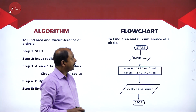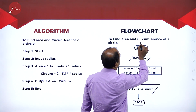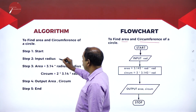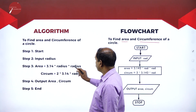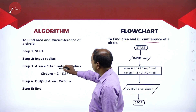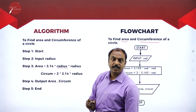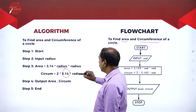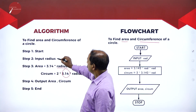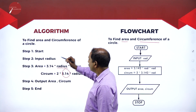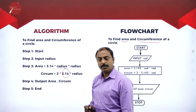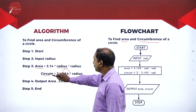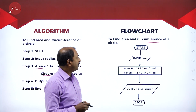Now let us move on to the next example: a flowchart to find the area and circumference of a circle. The algorithm starts with input radius. We know the formulas — area = π r² and circumference = 2πr. We enter the value of radius, with π as the constant 3.14. Then we input the radius, apply the formulas (processing), and print the output: the values of area and circumference.